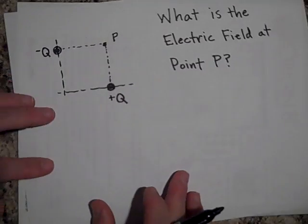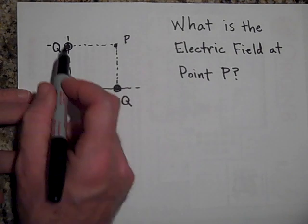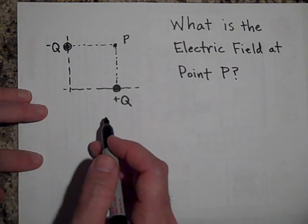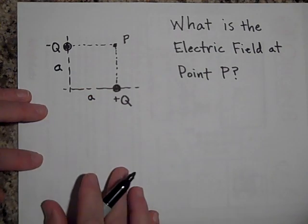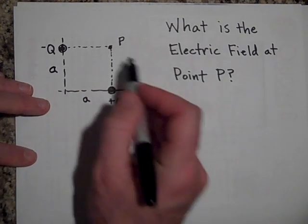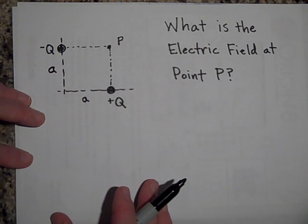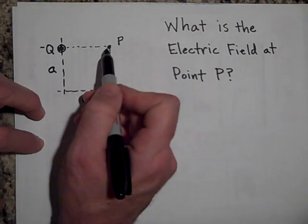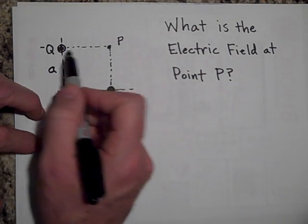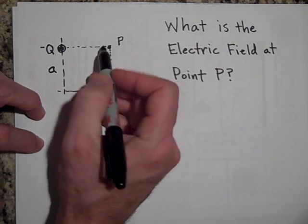We have two equal but opposite charges at two diagonal corners of a square. And let's call this A and A. And we'd like to know what the electric field is at point P. What will be the electric field at point P? Go ahead and try it. Okay. The electric field at point P, well, let's first just deal with this guy. Forget about that one. We'll use the principle of superposition.